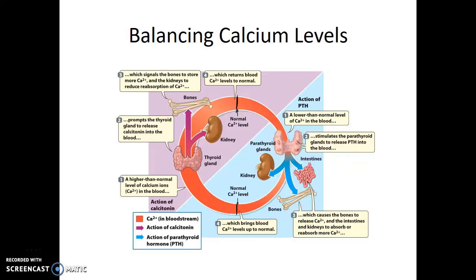Conversely, if we have a lot of calcium in our diet, the thyroid gland will release the hormone calcitonin. Calcitonin will stimulate the deposition of calcium in the bones, and will also tell the kidneys that we have too much calcium, so that more of it should be flushed from the body in the urine. This brings the blood calcium level back down to the set point, and the production of calcitonin will stop. Both of these hormones, even though they're antagonists, are used by the body to help maintain homeostasis.